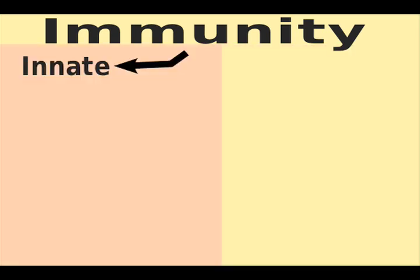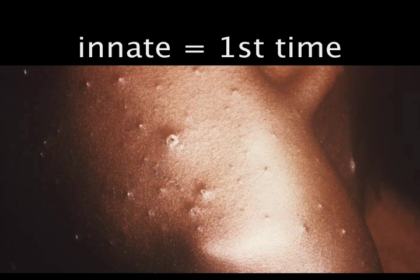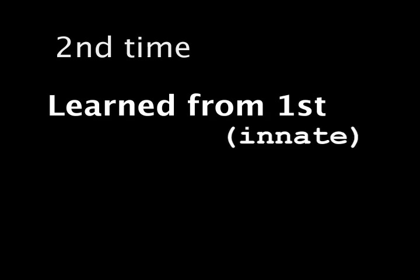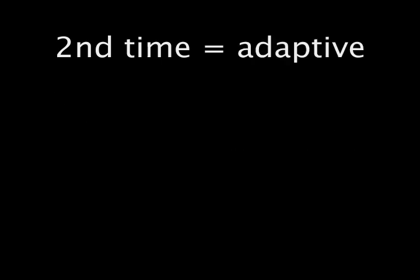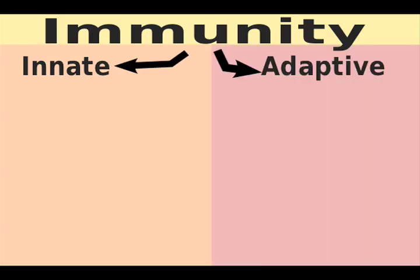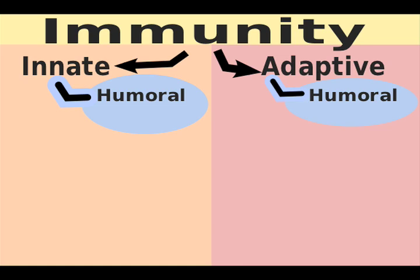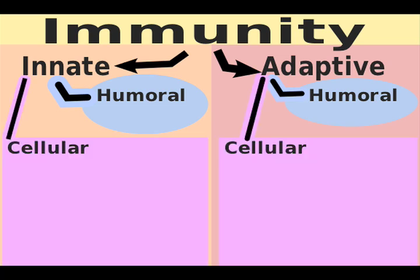Innate immunity is like when you first had chicken pox and you eventually fight it off. The second time you get chicken pox, your immune system has learned from the first exposure and supplements the innate response with an adaptive response to more effectively fight it off. Both innate and adaptive immunity consists of humoral and cellular components.